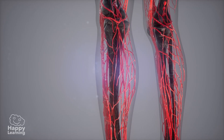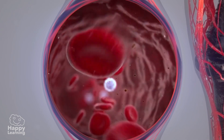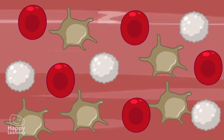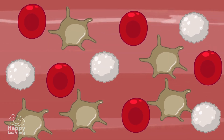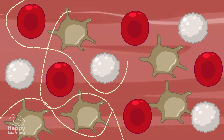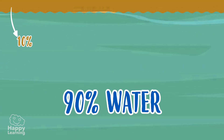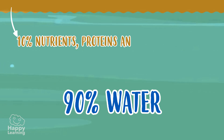But what is blood made up of? Blood is made up of plasma and blood cells. Plasma is the liquid part of the blood and is made up of 90% water and 10% nutrients, proteins and other substances.